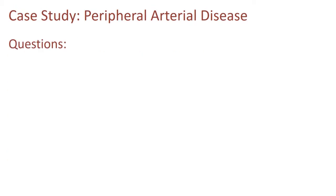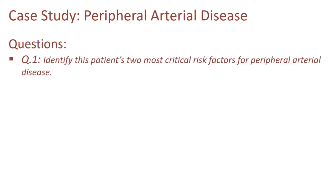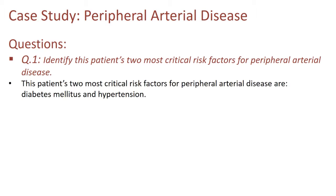First question: identify this patient's two most critical risk factors for peripheral arterial disease. The patient's two most critical risk factors are definitely diabetes mellitus and hypertension. She has a 40-year history of type 1 diabetes and she is hypertensive. Both are very important risk factors for the process of atherosclerosis that results in peripheral arterial disease as well as ischemic heart disease.